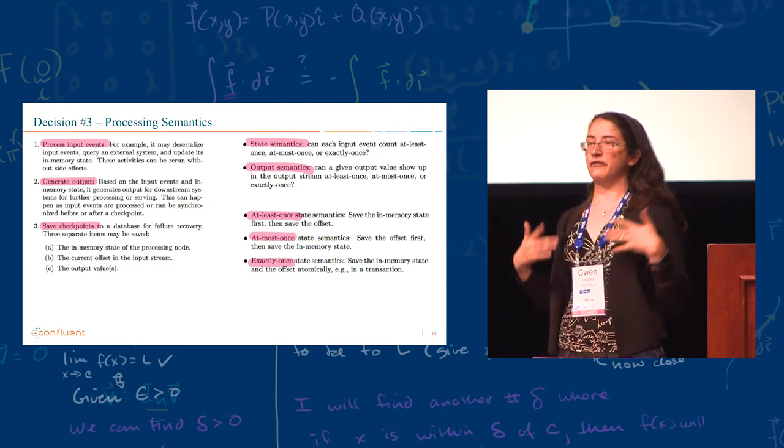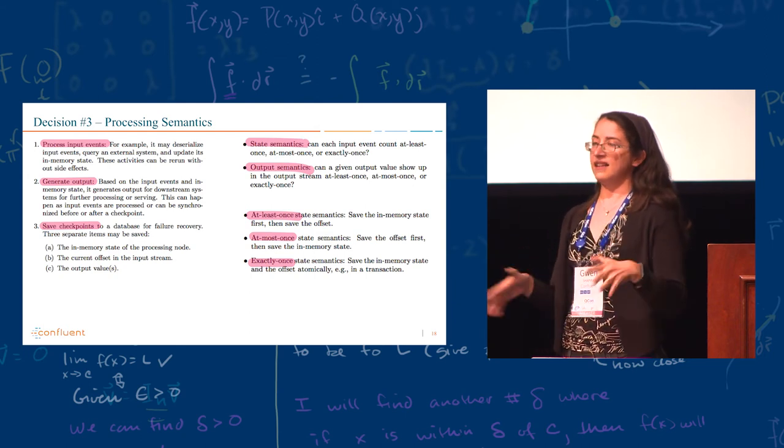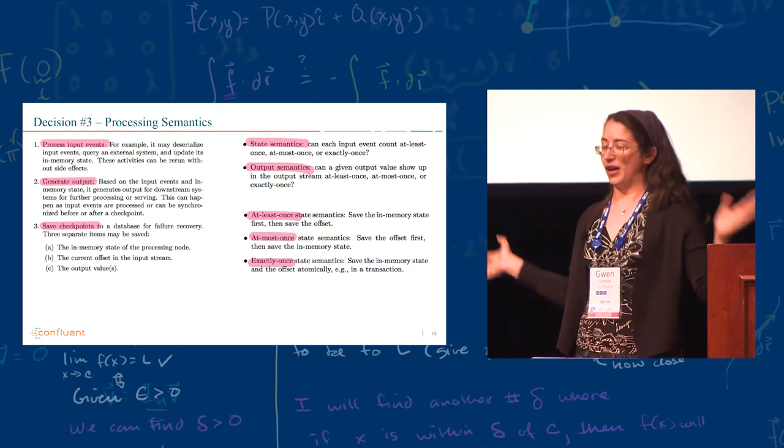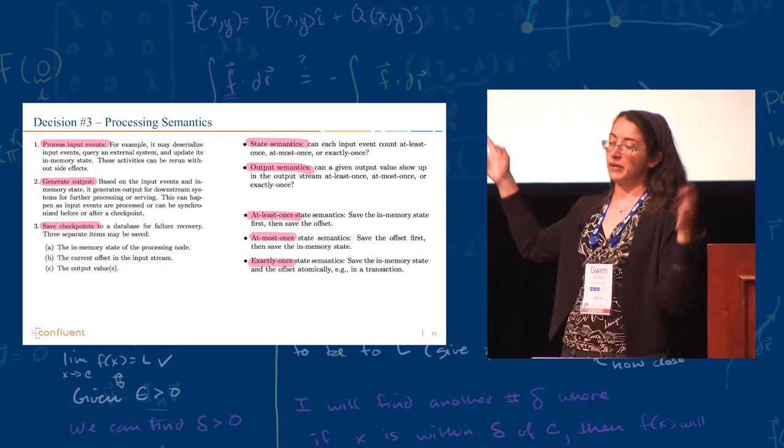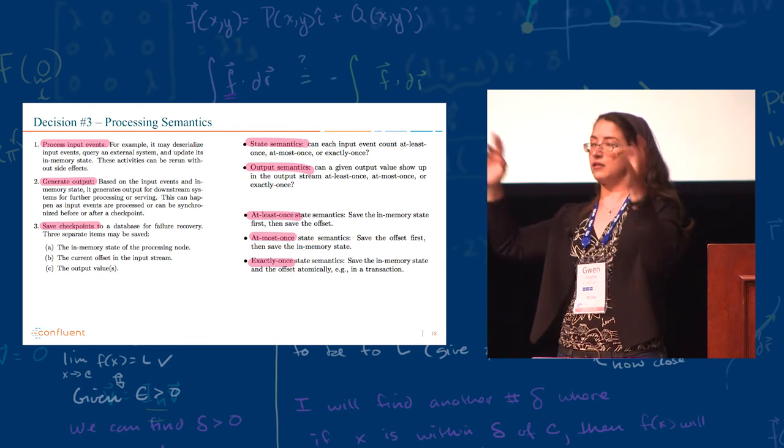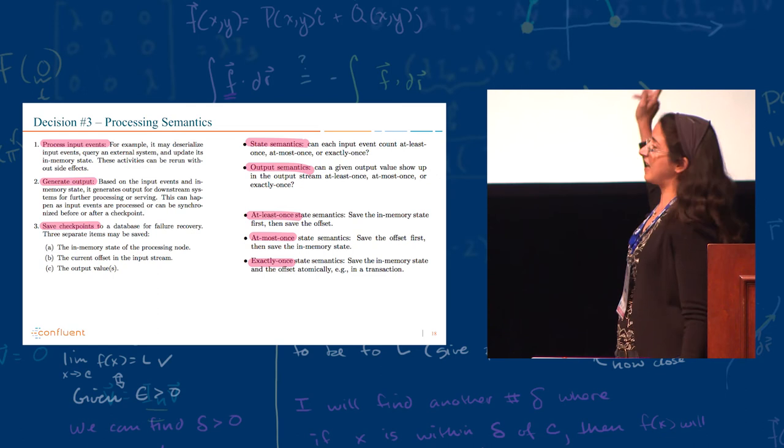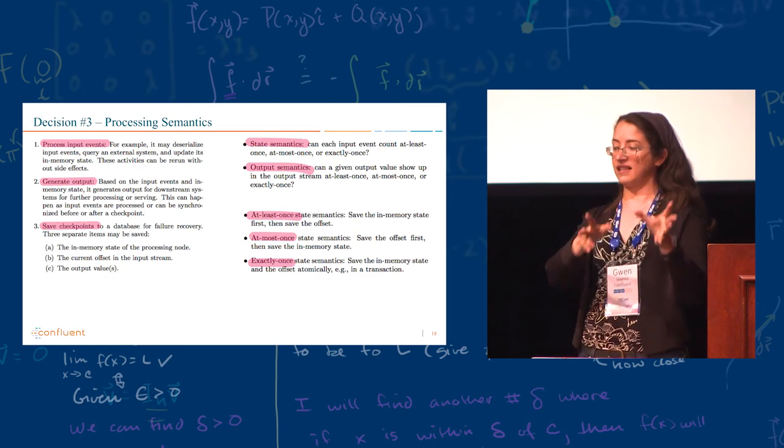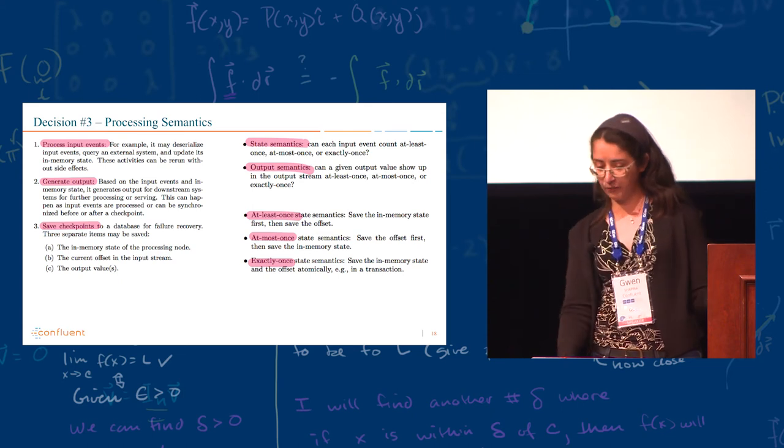And each one of them can be at least once, meaning we are processing everything, but there could be duplicates. At most once, meaning we could lose some events. And exactly once, meaning exactly once. And the state can be exactly once while the output is at most once. You can get a lot of flexibility. And nobody else that I know ever wrote about the distinction between how you maintain a state and how you do the output. Everyone thinks it's the same, but it's really not.